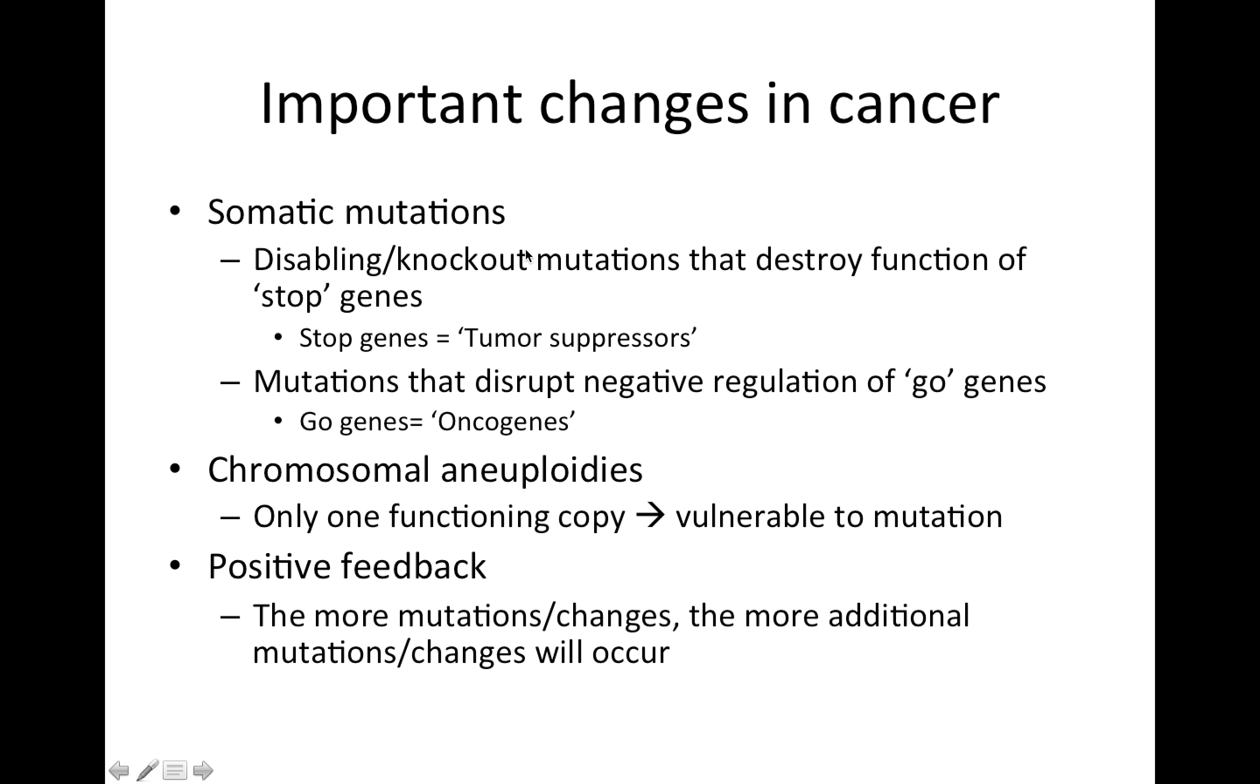And so here's what we've discussed. Important changes in cancer include somatic mutations. And we talked about two major kinds of them. So we have disabling mutations that knock out our tumor suppressors or our stop genes. And then we have mutations that disrupt negative regulation of our go genes, which we're going to call oncogenes. So this is just here in this slide, with tumor suppressors or the stop genes, oncogenes are the go genes.